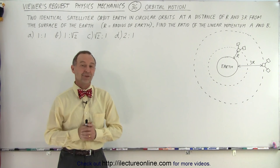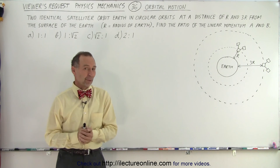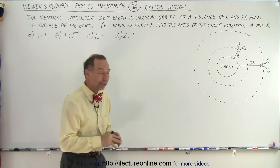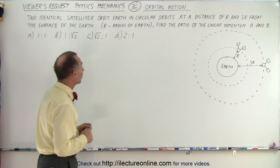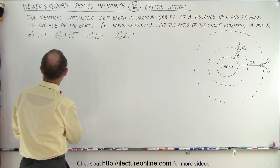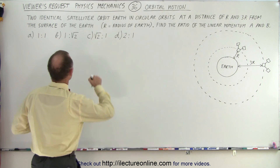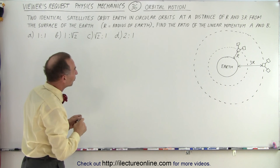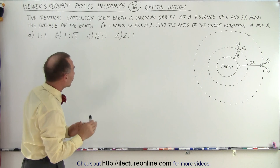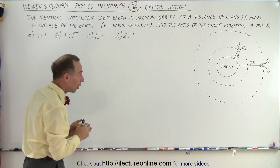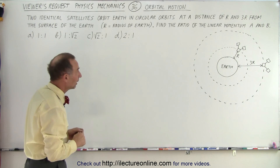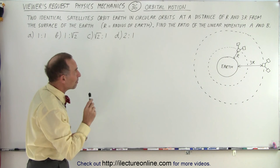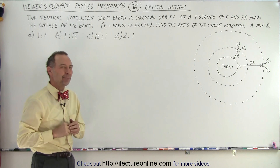Welcome to our lecture online. Here's another interesting view request. It deals with orbital motion and satellites going around the Earth in circular paths. The problem reads as follows: two identical satellites orbit Earth in circular orbits at a distance of r and 3r from the surface of the Earth, r being the radius of the Earth. We are asked to find the ratio of the linear momentum of A and B.